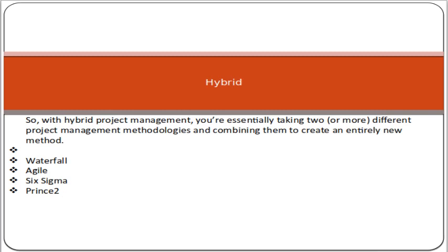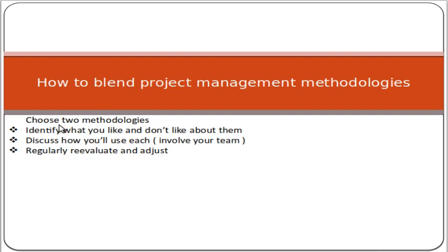To blend methodologies for a hybrid approach: first, choose two methodologies — for example, waterfall and agile. Then identify what you like and don't like about each — for instance, you may like that waterfall does all planning early, but dislike that customer feedback comes very late. Next, discuss with your team how you will use each approach and get their input. Finally, regularly re-evaluate and adjust your methodology as things progress, making changes as needed.